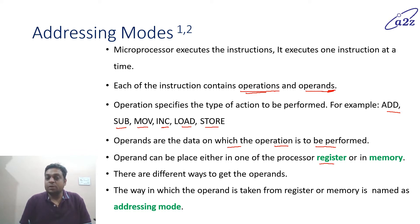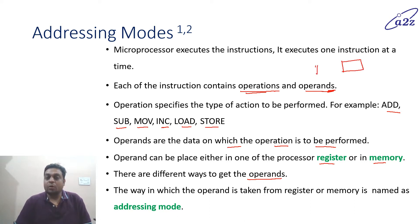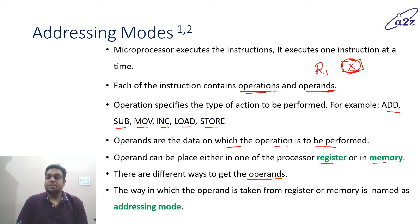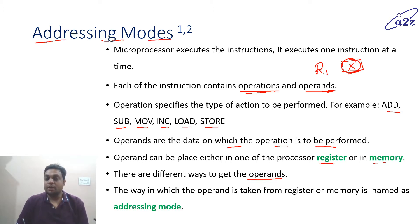There are different ways to get the operand. How can we know that — if this is a register R and there is some value X — whether X is the operand or X is the address of the operand? To note this, we have a technique known as addressing modes. The way in which the operand is taken from the register or memory is known as addressing modes.